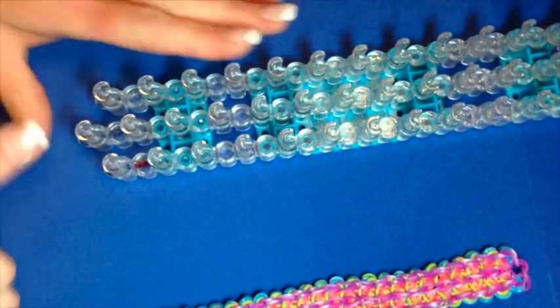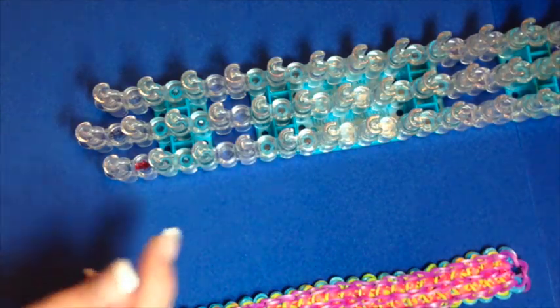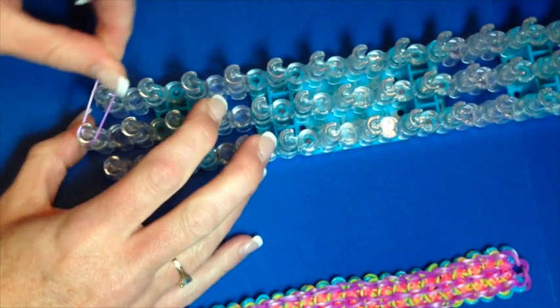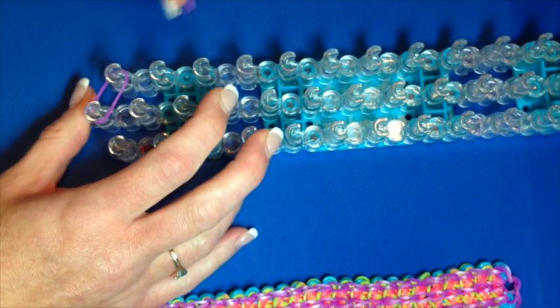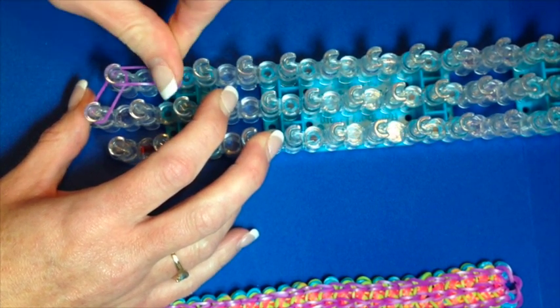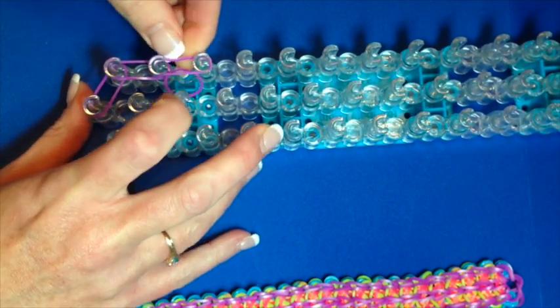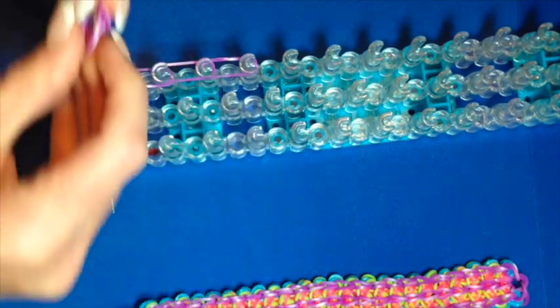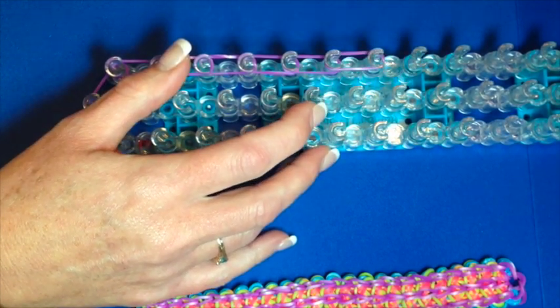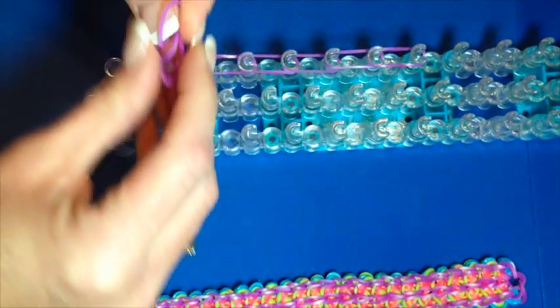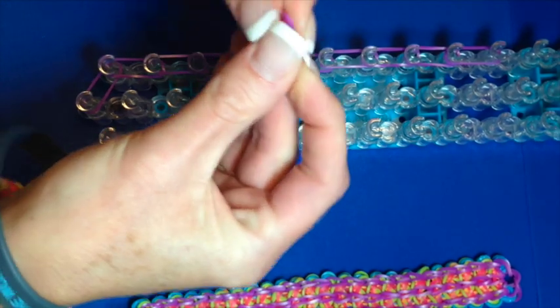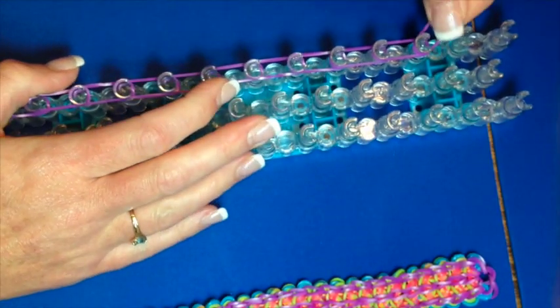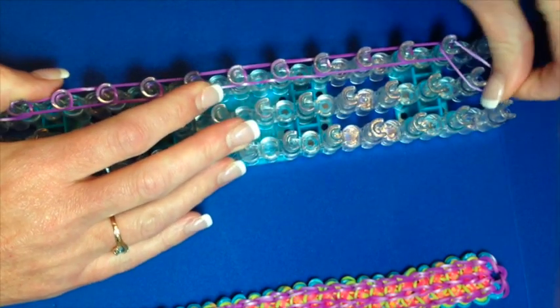So let's get started. We're going to have just standard configuration with your arrows pointing away from you. And what we are going to do is just do a triple single basically to start off with. So we're going to be doing all three rows in the middle.